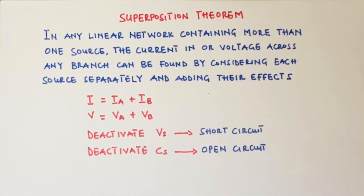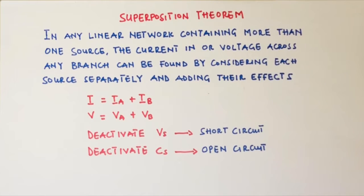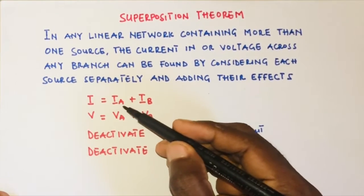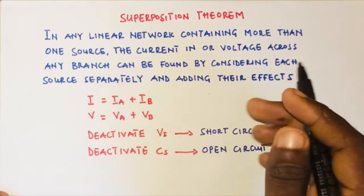What this primarily means is that if you have any linear circuit with more than one source — let's say you have a circuit containing two sources and you want to find the current in or voltage across a particular branch — then you are going to consider one source at a time, which means you deactivate the other source while you solve the problem. After solving, you can denote the voltage or current component as VA or IA.